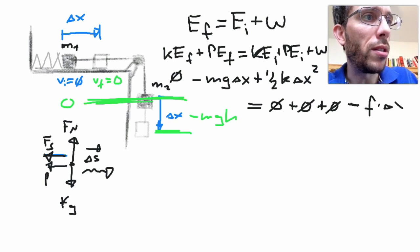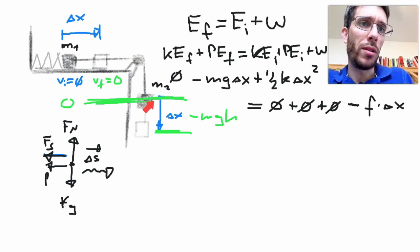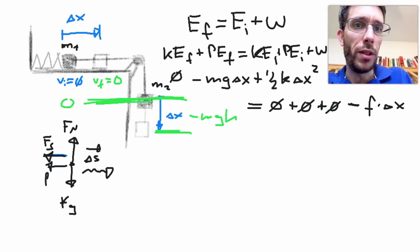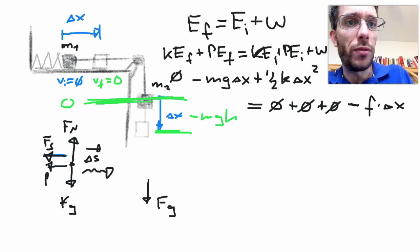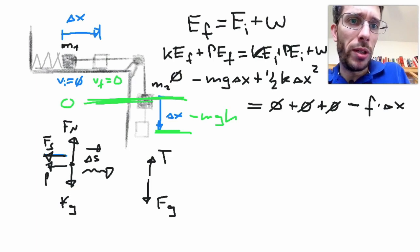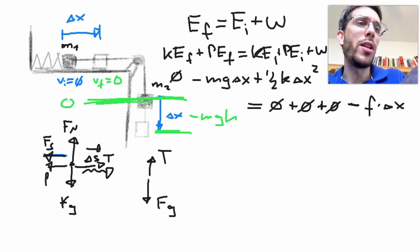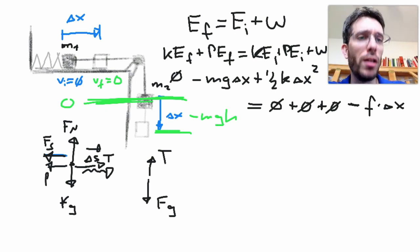What forces are doing work on M2? If I do that free body diagram, I will see the following. So I have M2, I have the force of gravity going down, and the force of tension going up, which actually reminds me, I completely forgot that there is a tension here going to the right. The two tensions, if my pulley is frictionless, have always been equal.